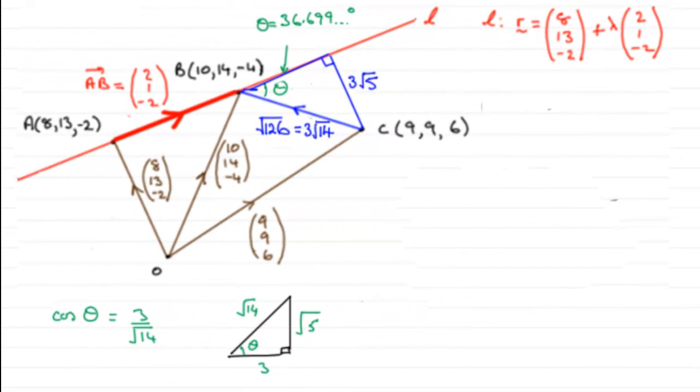Now for this last part we're told that X is a point on this line L such that CX is perpendicular to L. Well clearly it's got to be this point here because at X we found that CX represented the shortest distance.